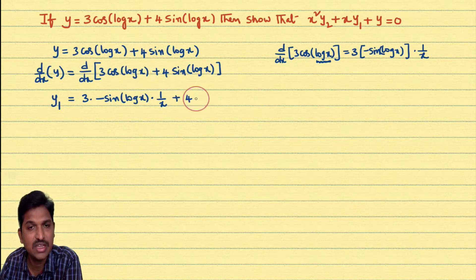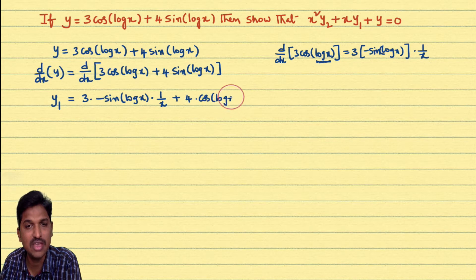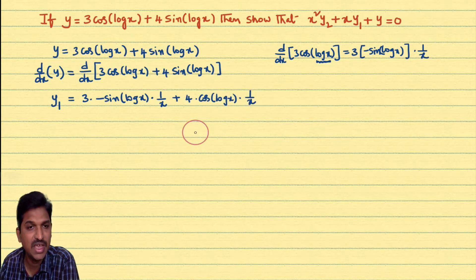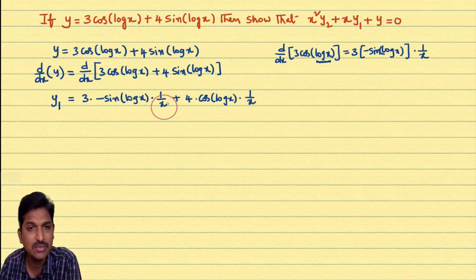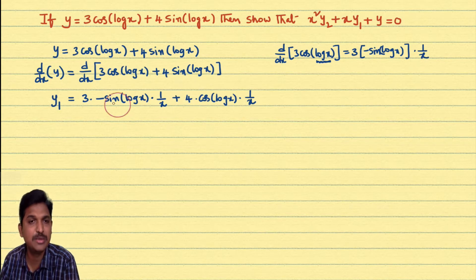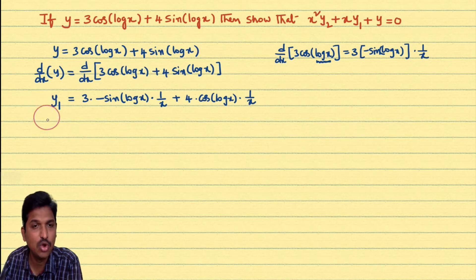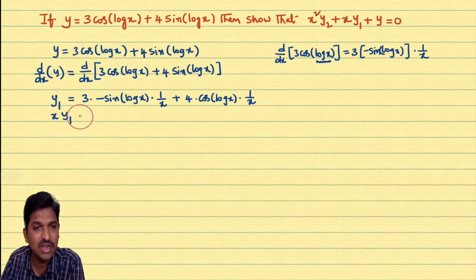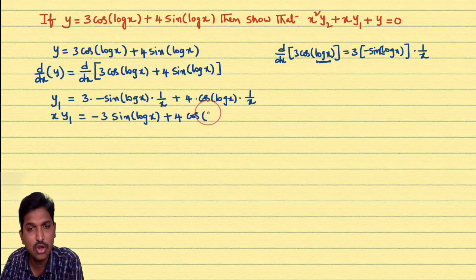Both terms contain 1/x. Taking 1/x common and multiplying both sides by x gives: xy₁ = -3sin(log x) + 4cos(log x). We need chain rule differentiation to do this problem.